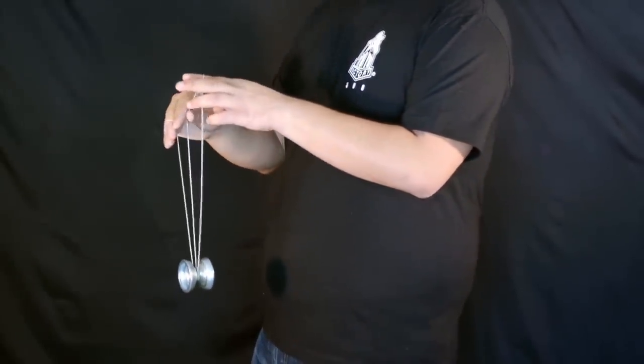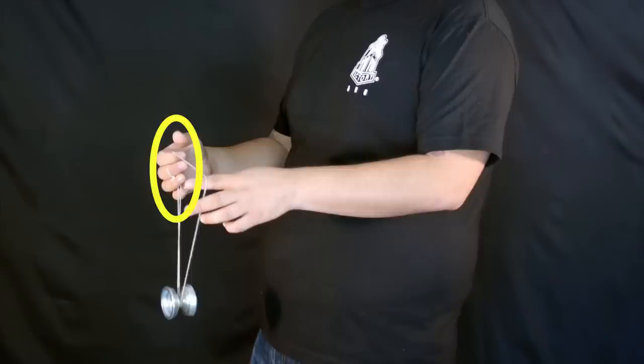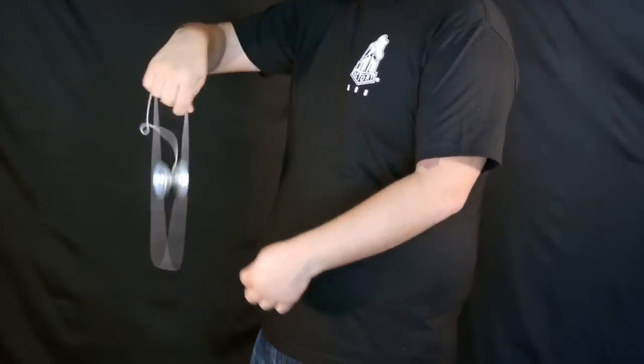Next part's a matter of preference. I use three fingers to spread apart the inside string. You can use any number of fingers that you want. We're going to pop the yoyo on the inside, whip your hand around. We're going to land the yoyo on the back string.